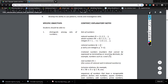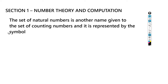The first set is the set of natural numbers, another name given to the set of counting numbers. It's represented by the symbol N — some people write it with a little line before the N, but this is the symbol for the set of natural numbers.